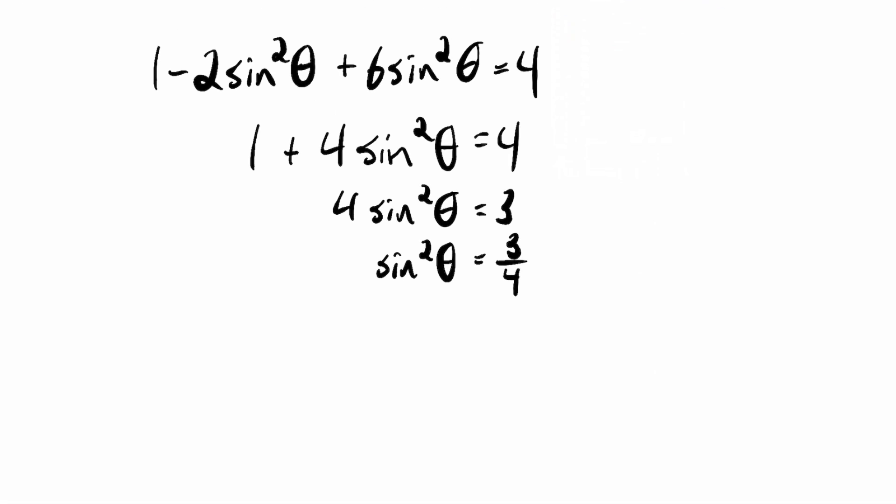Now, you can think of applying the square root function to both sides. But I'd rather reason through it this way. If I know that something squared is 3 fourths, then that something would have to be plus or minus the square root of 3 fourths. So sine theta is going to be the positive square root of 3 over 4, or sine theta will be the negative square root of 3 over 4.